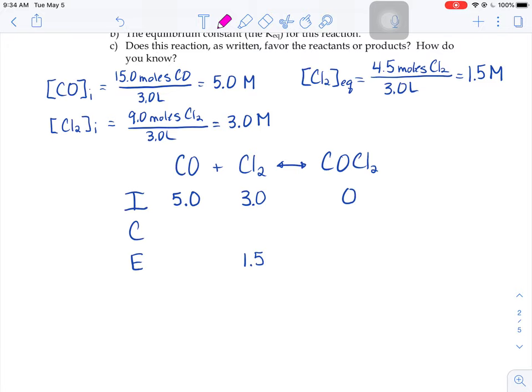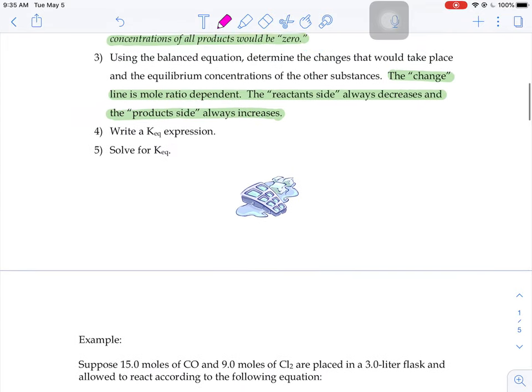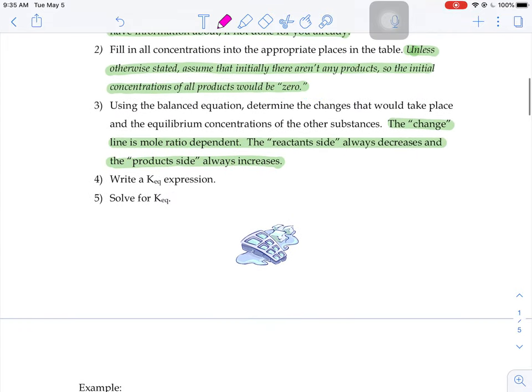The change in that number, it went down by 1.5. So I'm going to subtract 1.5 from my chlorine as my change value. Now the change value line, it told us up here, the change value line is mole ratio dependent.